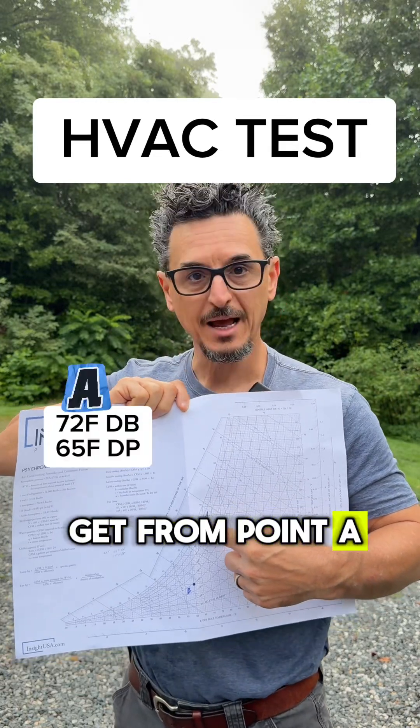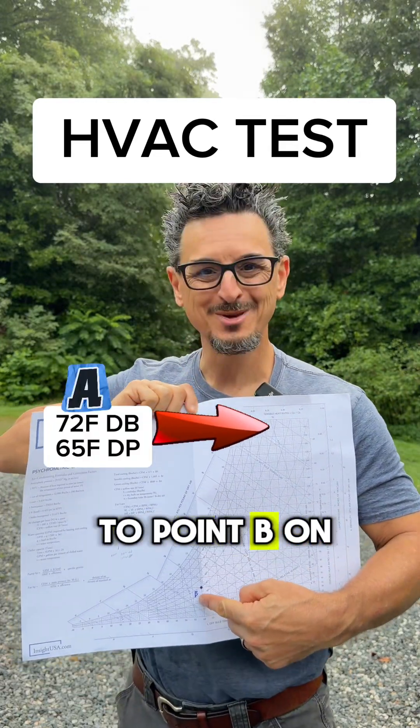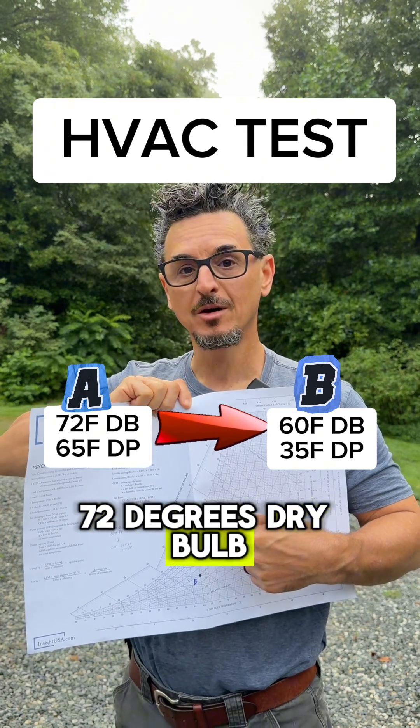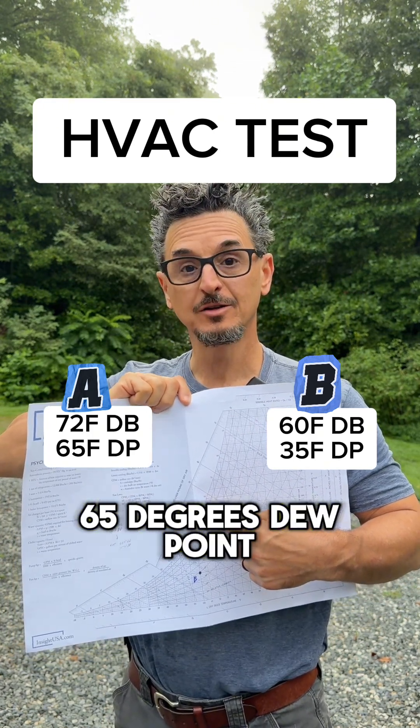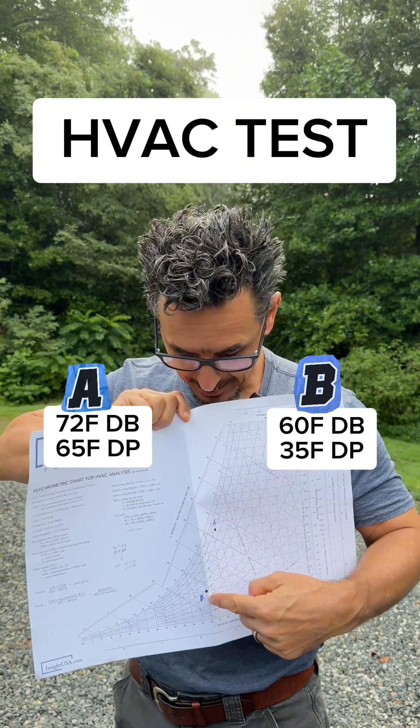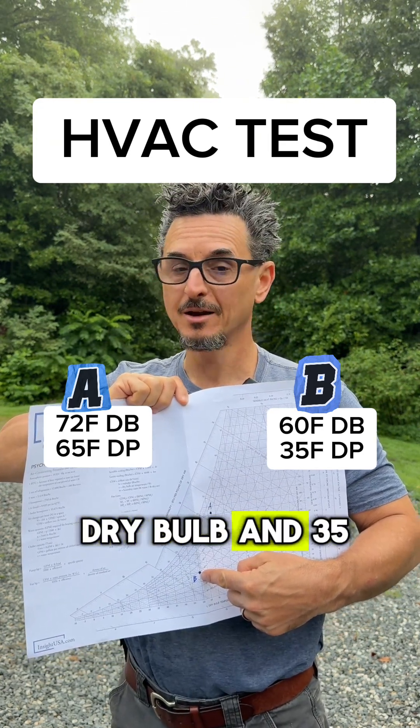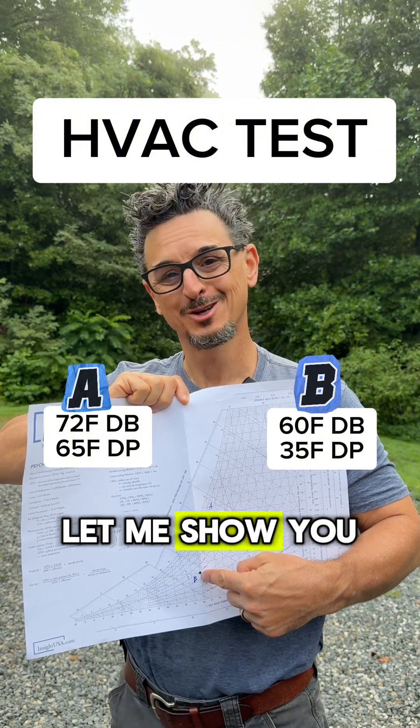How do you get from point A to point B on the psychrometric chart? 72 degrees dry bulb, 65 degrees dew point, down to 60 degrees dry bulb and 35 degrees dew point. Let me show you on the psychrometric chart.